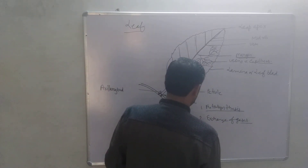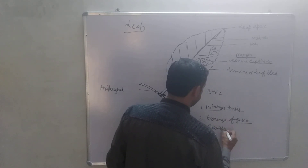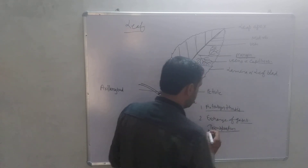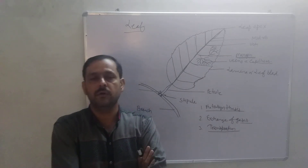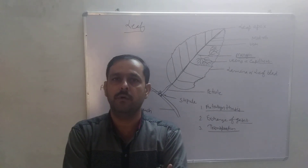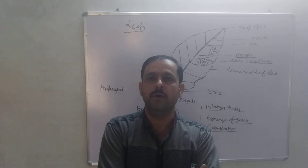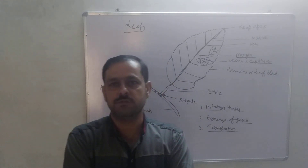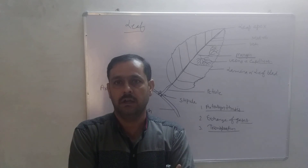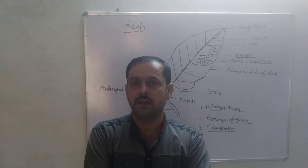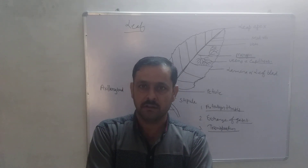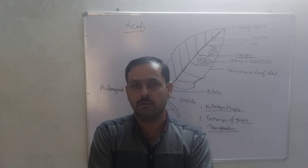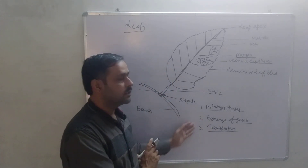Third, the main function of leaf is transpiration. Transpiration is the loss of water in the form of vapor. Transpiration is called a necessary evil for plants. If plants do not transpire, then they cannot absorb water. So these are the functions of leaf.